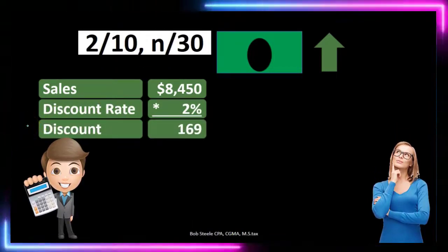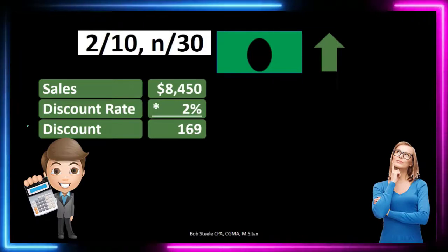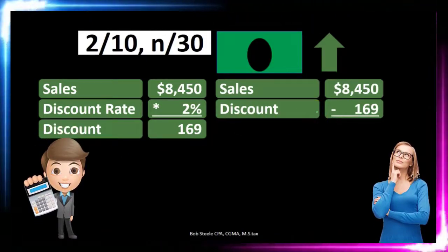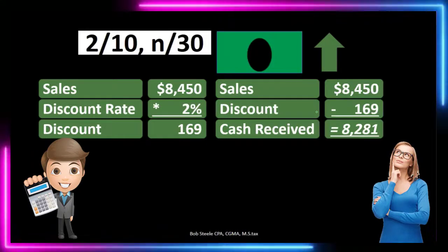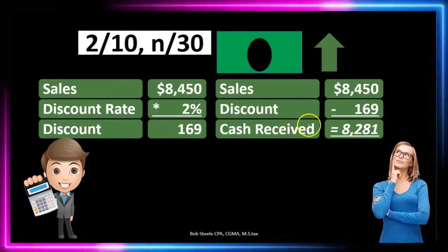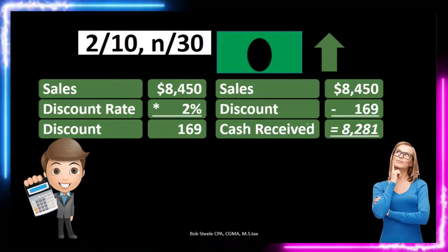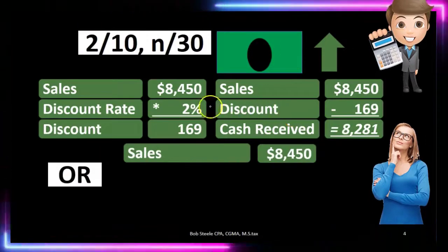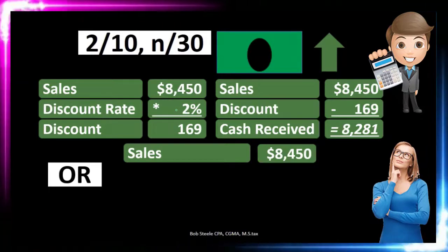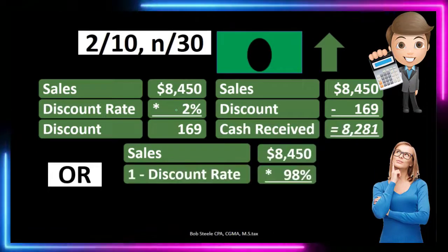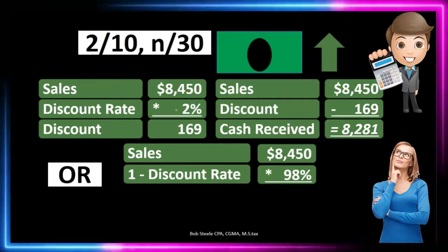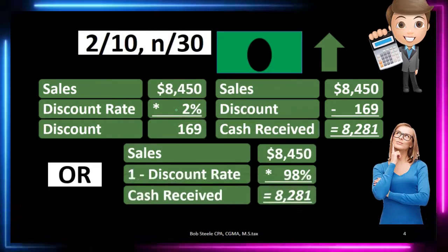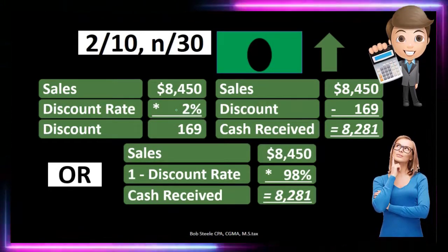The discount is $169, so the cash received would be $8,450 minus $169, which equals $8,281. We can do this faster by recognizing: if we're not getting 2% of the money, we're getting 98% — that is, 100% minus 2%. So $8,450 times 98% also gives us $8,281. That's how much cash we are actually going to receive.